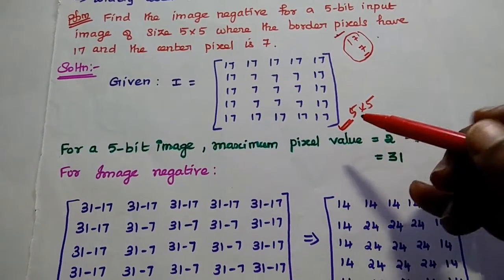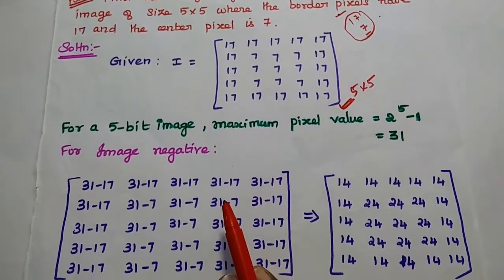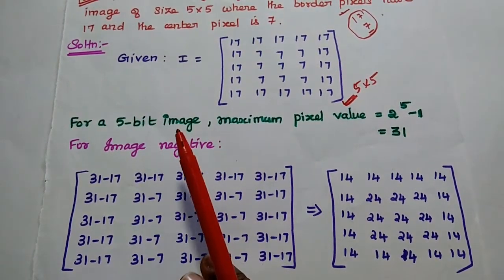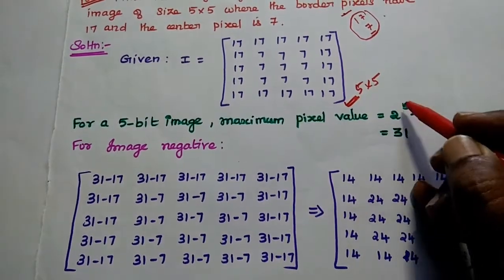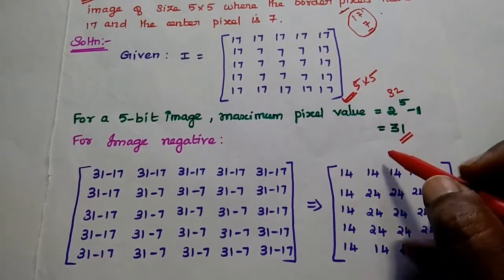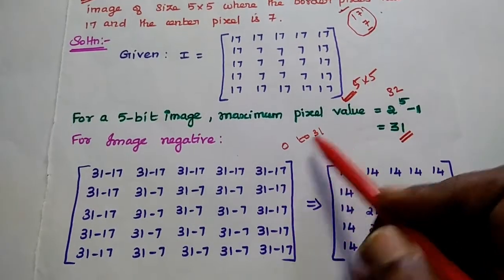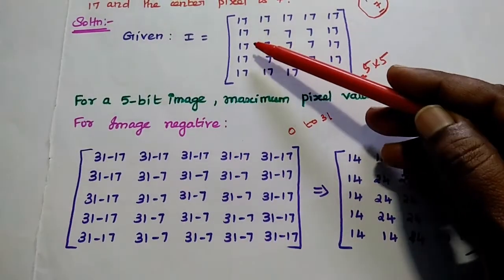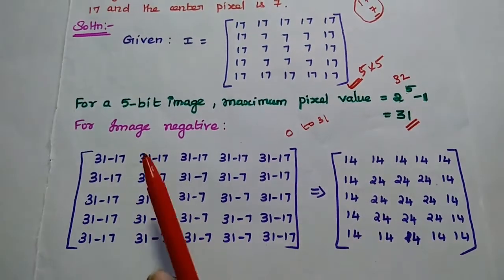We are going to take the image negative of that data. For image negative, we need the maximum pixel value. Since the image is a 5-bit image, the maximum pixel value is 2 to the power 5 minus 1, which is 32 minus 1, equal to 31. So for a 5-bit image, the minimum value is 0 and the maximum value is 31.